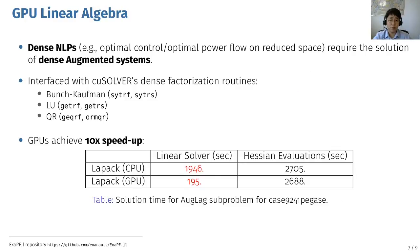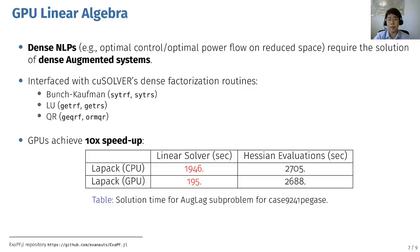Another promising direction is performing linear algebra computations on GPU. Linear solvers on GPU are particularly effective for dense NLPs, which arise in reduced-space optimal control and optimal power flow problems. In MadNLP, we have an interface to different factorization and solution routines in the CUDA library. Since we are dealing with a symmetric linear system, the Bunch-Kaufman method is typically the most effective one. Here at Argonne, we have a team actively working on optimal power flow on GPU. One project aimed to solve the optimal power flow problem in the reduced space using MadNLP with CUDA's GPU solver, and my colleague Francois was able to achieve 10 times speedup compared to the CPU.